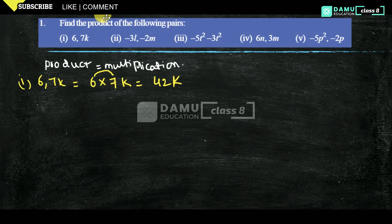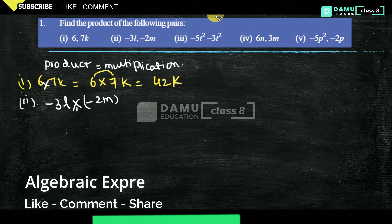Our next one, the second one, what is that is -3l multiplied with -2m. So just we will do one thing. So first multiplying, minus into minus, it will become plus.